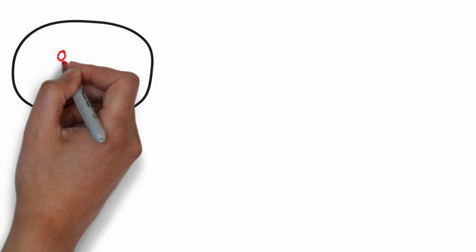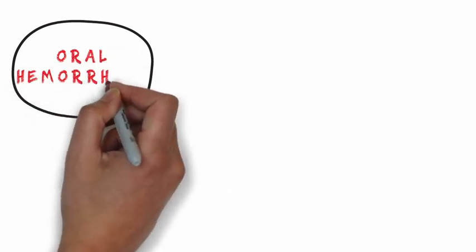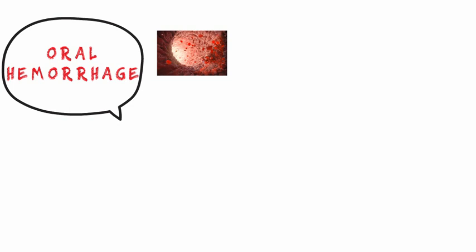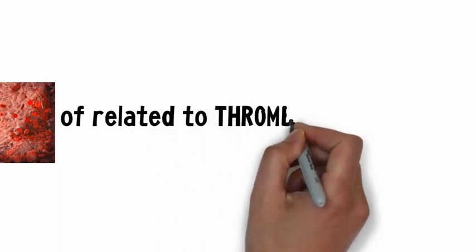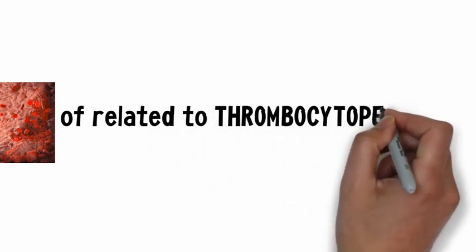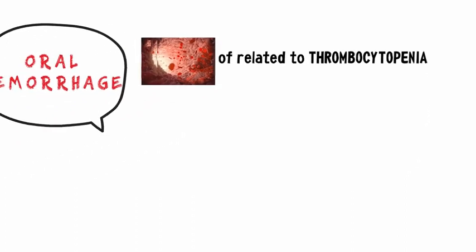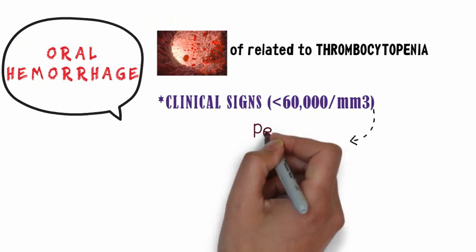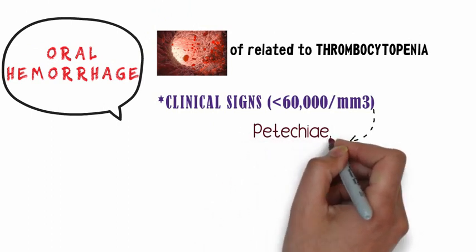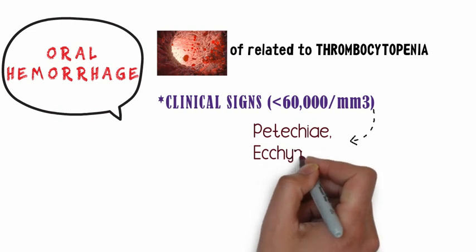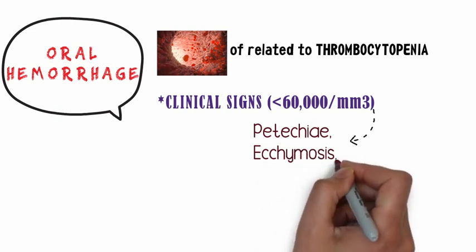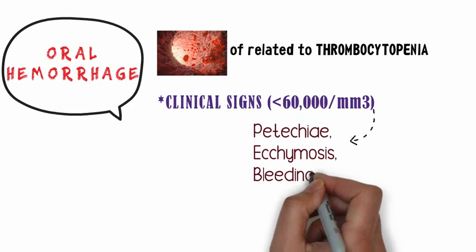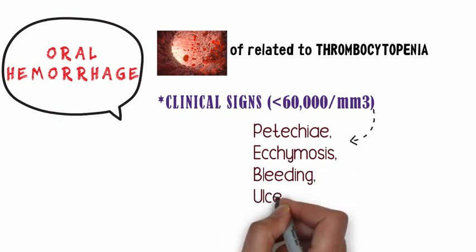Next is oral hemorrhage, or bleeding associated with the oral mucous membrane. This is seen when the patient's platelet count falls below 60,000 per cubic millimeter — a condition also called thrombocytopenia. The patient's microvascular integrity is compromised, so oral hemorrhage can take the form of petechiae, which are pinpoint red spots one to three millimeters in size, ecchymosis, which is similar to bruising, or bleeding of the gums as well as ulcerations.